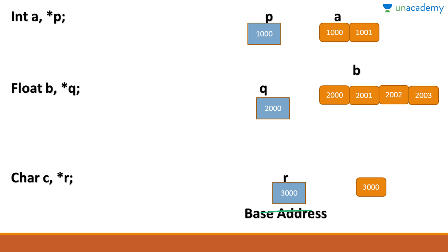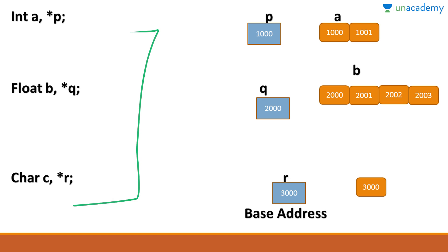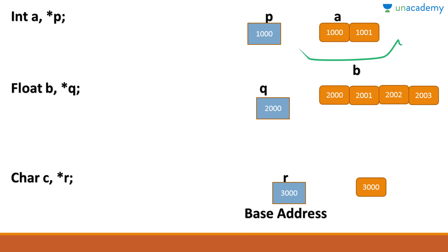We have declared pointers in int type, float type, and char type. If we declare a pointer as int type, we should only use it as int type, because the pointer size will vary — int uses 2 bytes, float uses 4 bytes — so the value will vary if we mix data types.